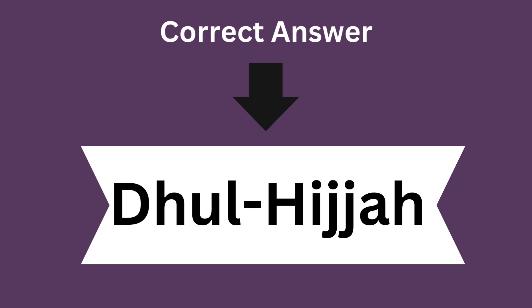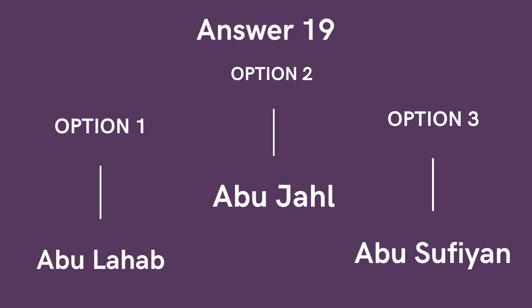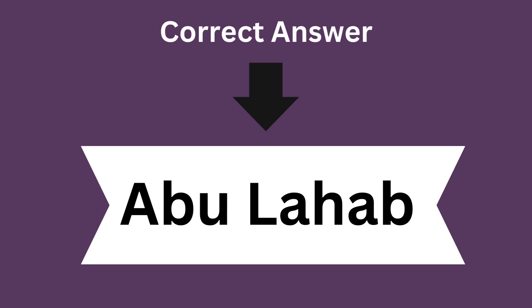Question 19: Who was condemned in Chapter 111 of the Holy Quran? Option 1: Abu Lahab. Option 2: Abu Jahal. Option 3: Abu Sufyan. The correct answer is Option 1, Abu Lahab. He was the uncle of Prophet Muhammad, sallallahu alaihi wasallam.